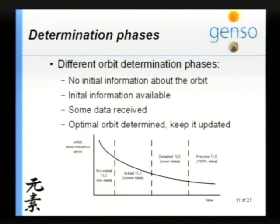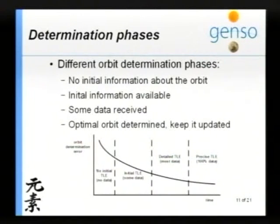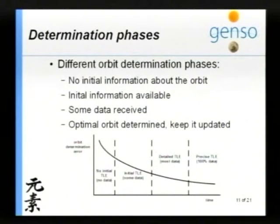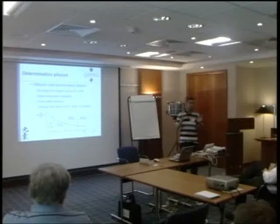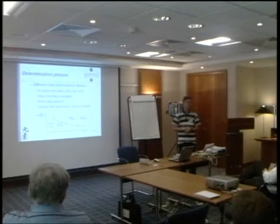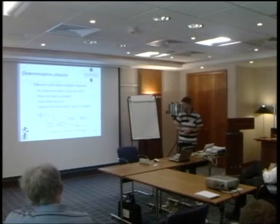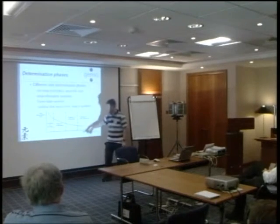Orbit determination phases — I think it's important to identify several stages. When you have no idea where the satellite is, you're in the first phase with no initial orbital information — though I think that won't happen, because even after a launch you know some inclination and height of the satellite. So you enter stage two, where it's still not clear exactly where the satellite is. Slowly, as you perform orbit determination, you get more and more data in, until you're almost as accurate as NORAD. At that stage it's important to keep the TLE updated, because the satellite is drifting slowly but it's a really small drift.